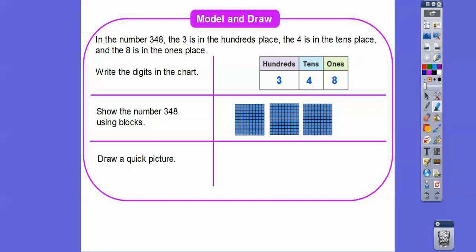Now four is in the tens spot, so we're going to draw four tens sticks: one, two, three, four. And then we're going to need eight ones: one, two, three, four, five — going down the other side — six, seven, eight.